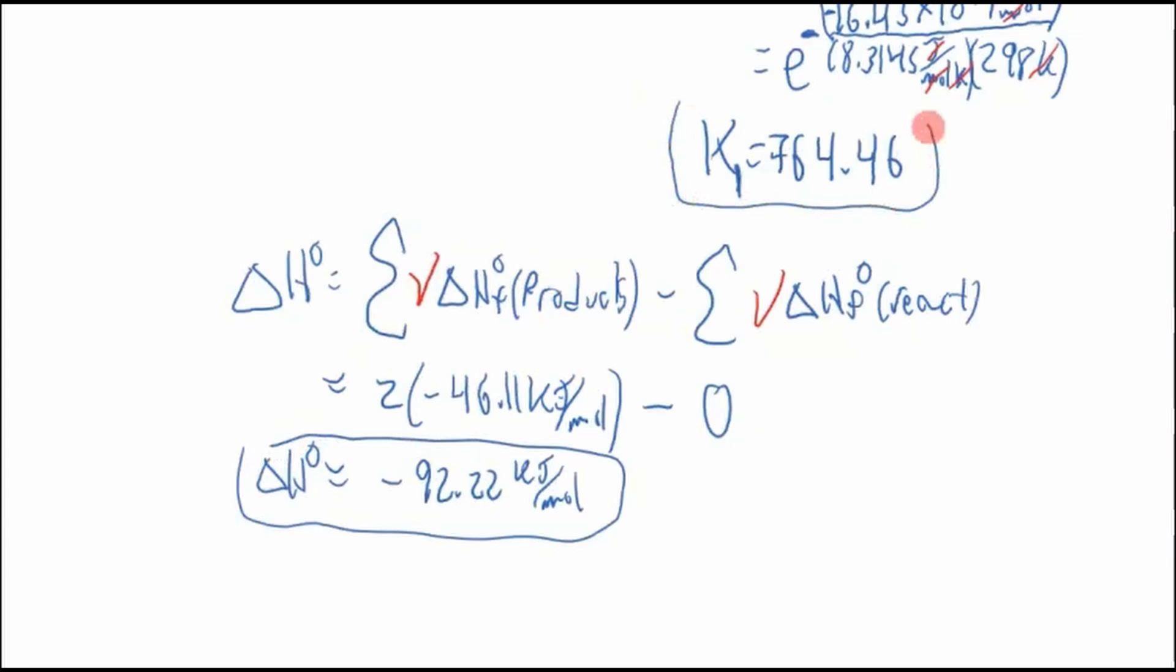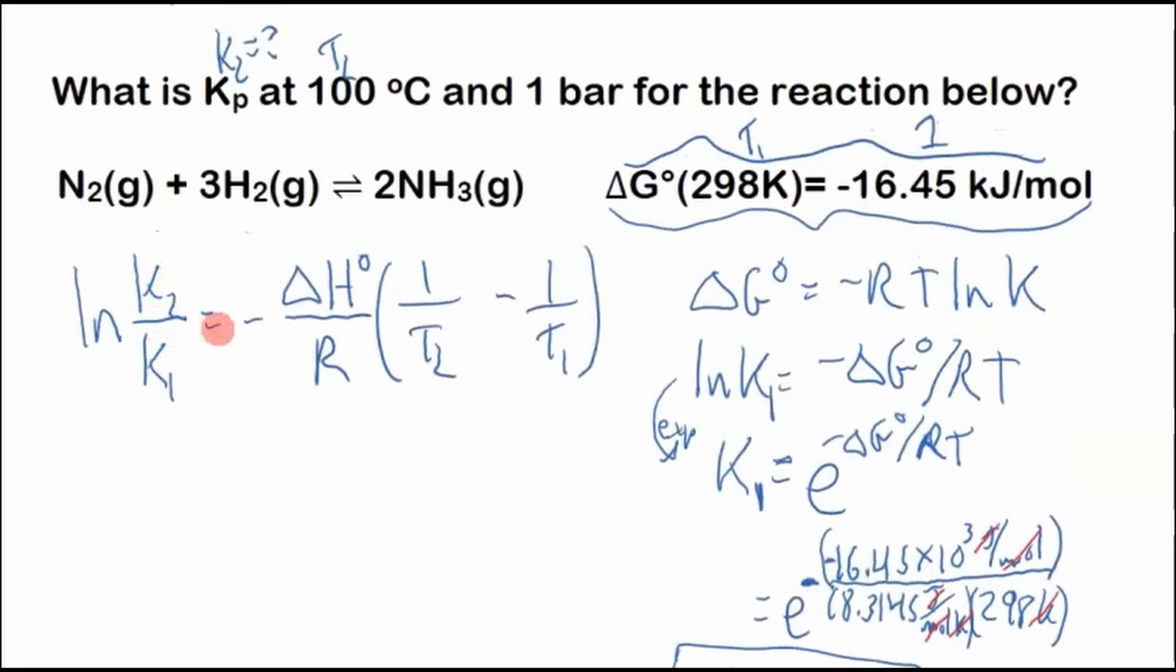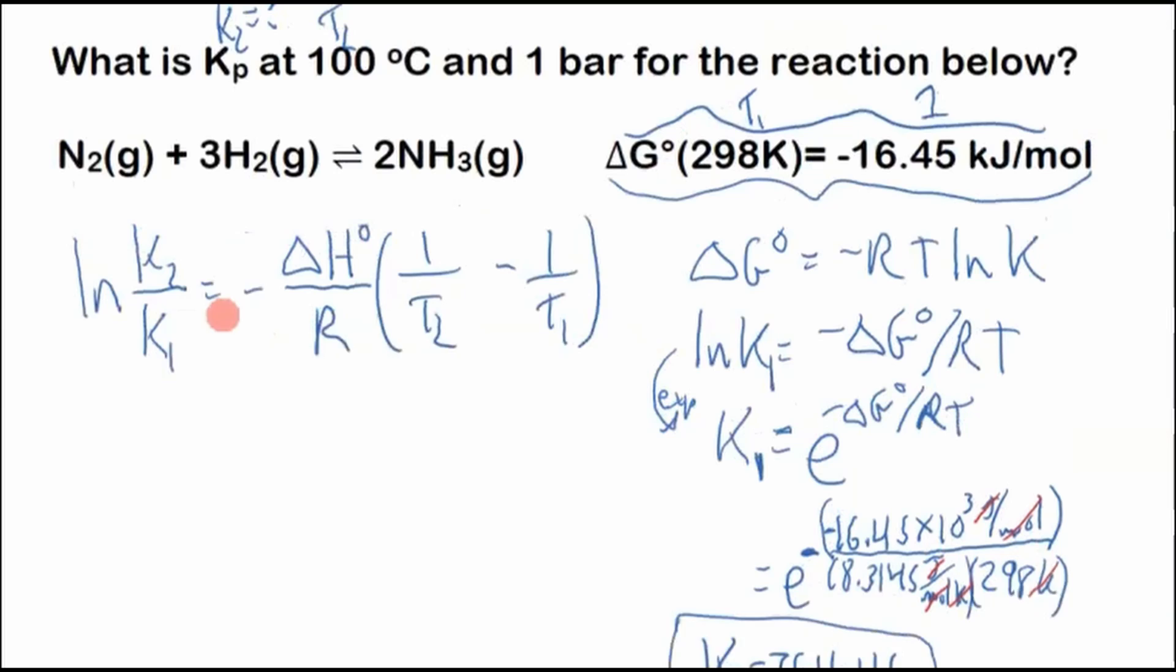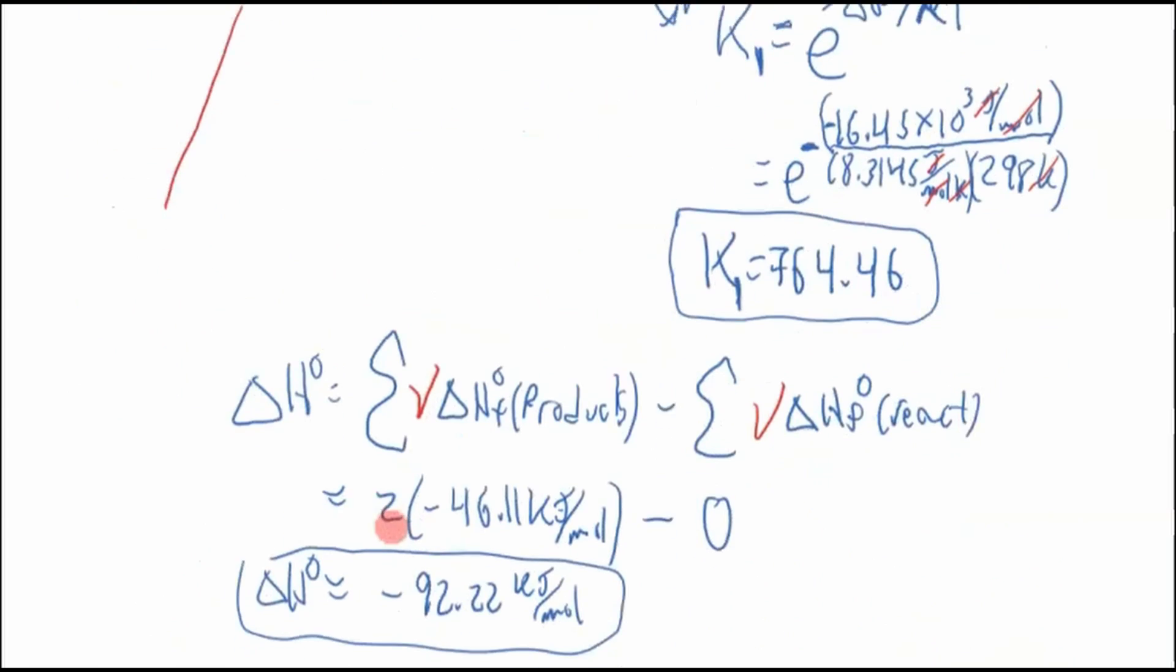Okay, we can do the question. So we got our K1, we got our enthalpy of formation, so we can plug it in and solve for K2. So we'll bring all of this stuff down. So T2 is going to be 100 degrees Celsius. T1 is 298 Kelvin. We've got to convert. Everything's got to be in Kelvin.